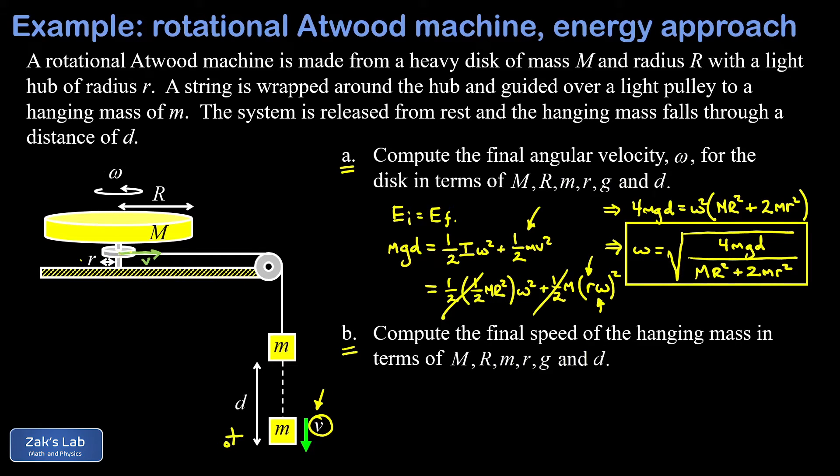That's telling us the speed on the edge of a disk of radius little r that's rotating with an angular velocity of omega, but that's the same as the speed of the string and that's the same as the speed of the hanging mass. So this v is just r times omega, but we just solved for omega, so all we have to do is take our previous answer and multiply it by little r. There's our expression for the speed of the hanging mass and we're done.